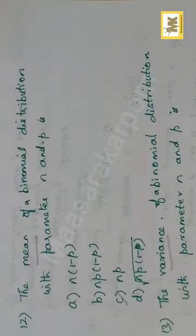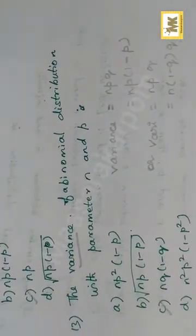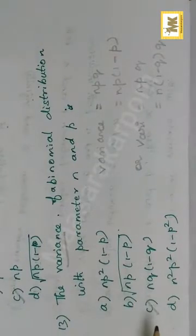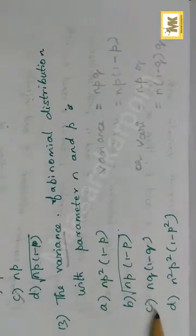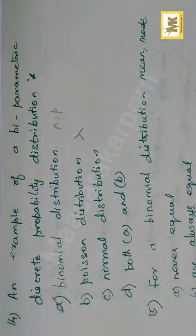Mean of binomial distribution is np and the variance is npq, which is np into 1-p. Binomial has parameters n and p. Poisson is uniparametric - lambda is the only parameter. Normal has mu and sigma as parameters, but it's continuous. Here discrete is mentioned, so answer is binomial.